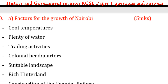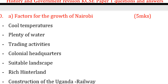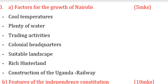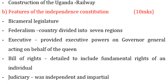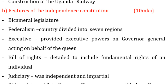Number four: it became colonial headquarters. Number five: suitable landscape — the area is not mountainous and was therefore suitable for building. Number six: rich hinterland. Number seven: the construction of the Kenya-Uganda Railway, which boosted the town and city to grow into what it is today.